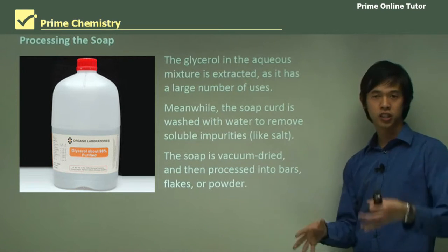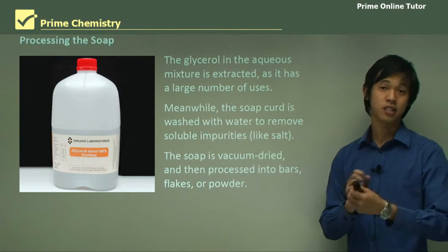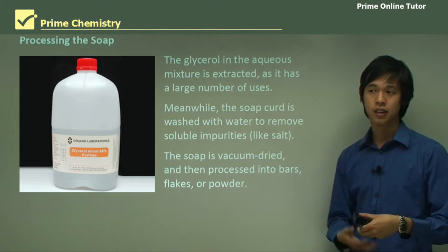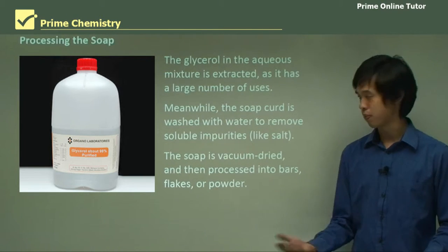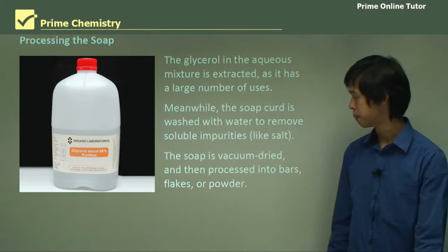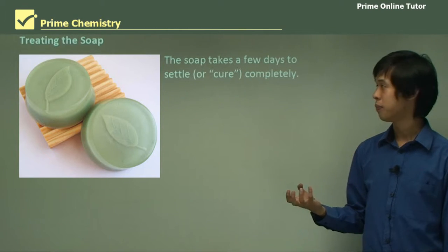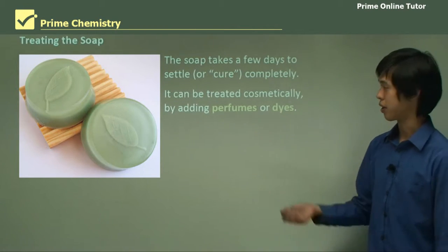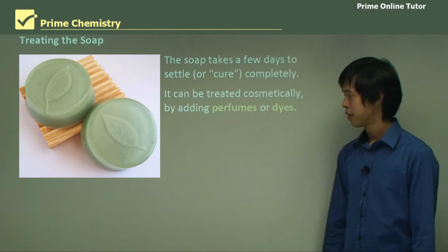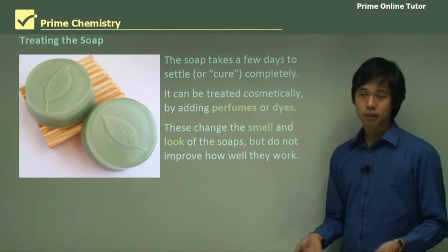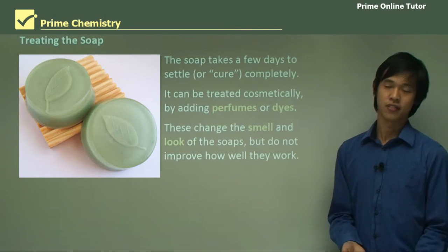We wash the soap — which sounds silly — but it's to remove the salt and also some of the sodium hydroxide. Then we vacuum dry it so we can turn it into bars, flakes, or whatever form we prefer. The soap takes a few days to settle or cure, and then we treat it cosmetically with perfumes or dyes. These added things only change the smell and look; they don't actually change how effective it is as a cleaning agent.